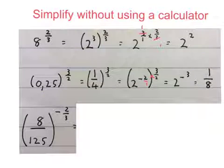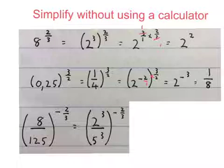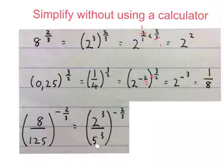The next expression that we have to simplify without a calculator we have a fraction at the base and a negative fraction as an exponent. The first thing we do is we make this 8 we change it to a product of its prime factors which is 2 to the power of 3 and 125 we also do the same so that becomes 5 to the power of 3.